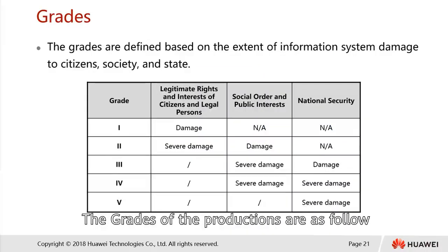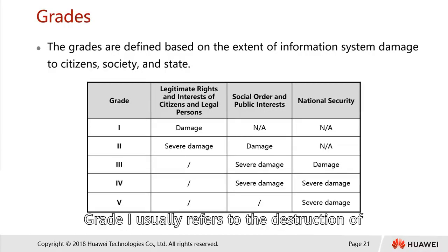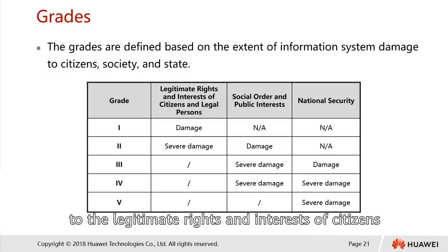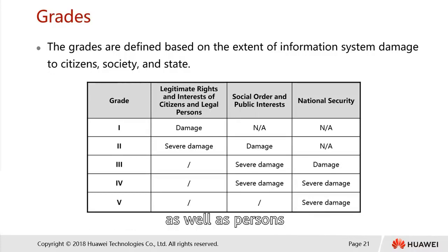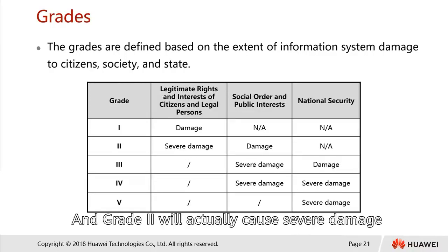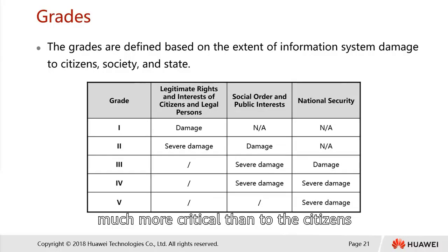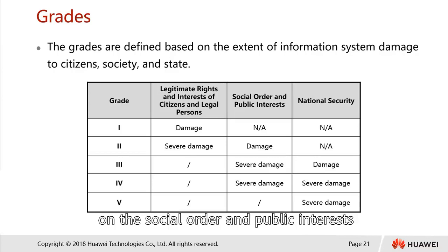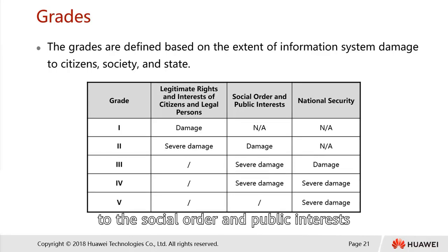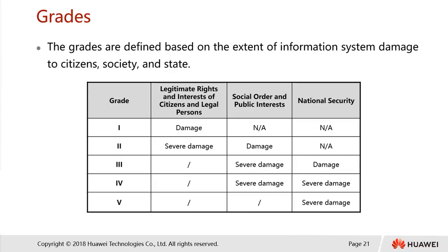The grades of protection are as follows. The table shows grades 1 through 5. Grade 1 refers to destruction of an information system that usually causes damage to the legitimate rights and interests of citizens and persons. Grade 2 causes serious damage — more critical for citizens and legal persons — and damage to the social order and public interest. Grades 3 and 4 will cause serious damage to social order and public interest, and normal to serious damage to national security respectively.